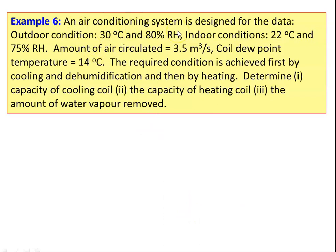Example number 6: an air conditioning system is designed for the following data. Outdoor condition: 30 degree Celsius, 80 percent relative humidity. Indoor condition: 22 degree Celsius, 70 percent relative humidity. Amount of air circulated: 3.5 cubic meter per second. Coil dew point temperature is 14 degree Celsius.